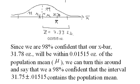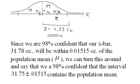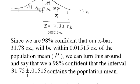We can turn this around and say that we are 98% confident that the interval 31.75 plus or minus 0.01515 contains the population mean.